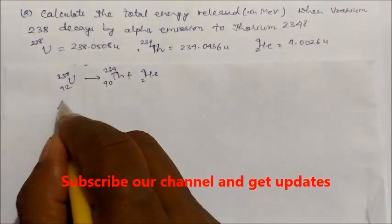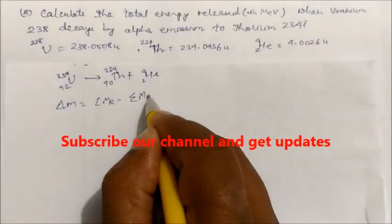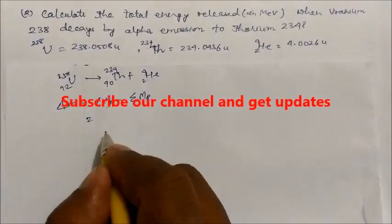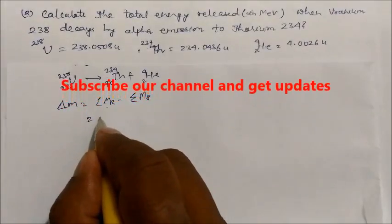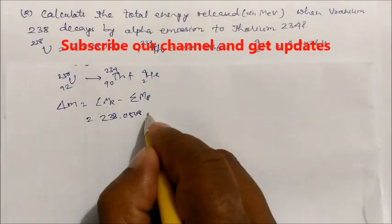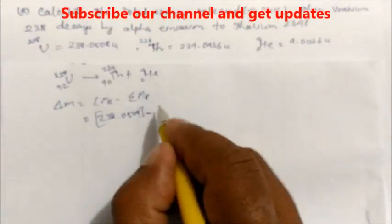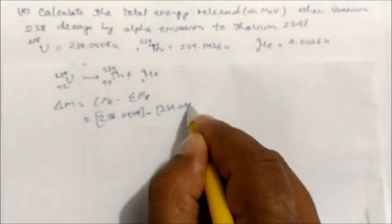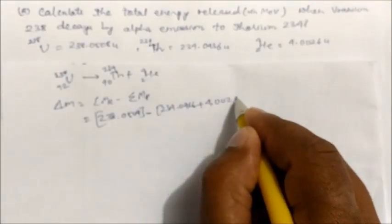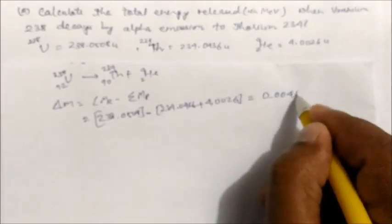The mass defect is the sum of the reactant masses minus the sum of the product masses. Mass of reactant is 238.0508 u. Products are thorium at 234.0436 u plus helium at 4.0026 u. On solving: mass defect = 238.0508 − (234.0436 + 4.0026) = 0.0046 u.